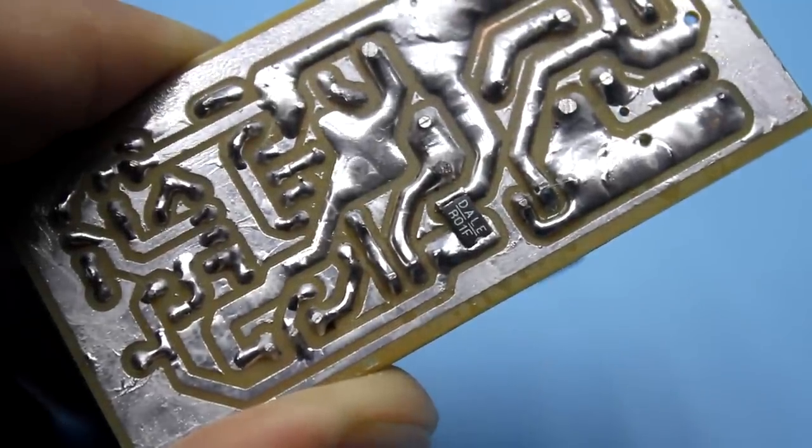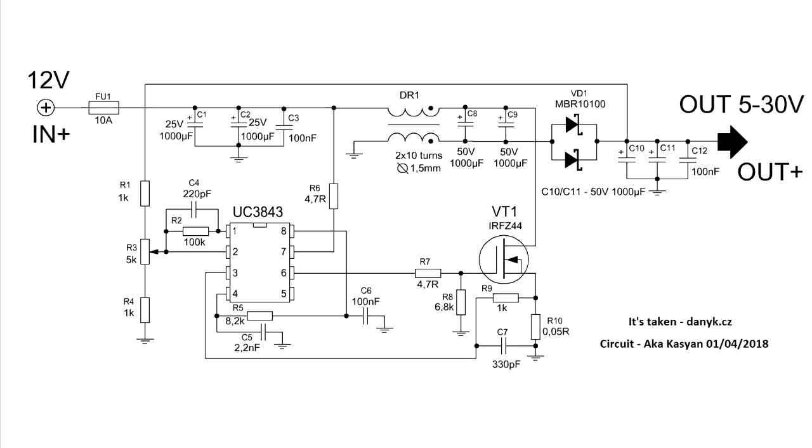The larger the resistance, the lower the tripping current of the protection. If the protection isn't needed, then this part can be excluded. Another of the protections is a 10A fuse.